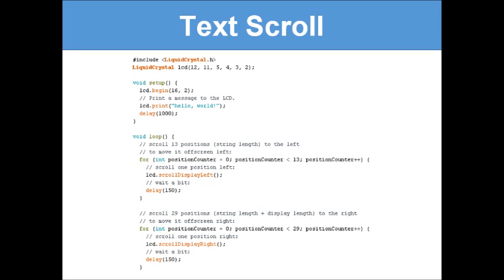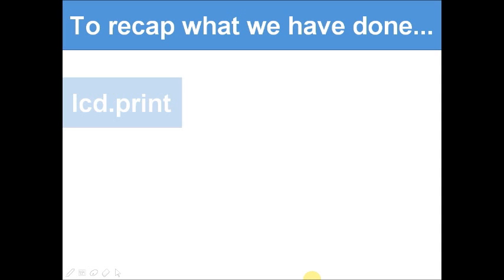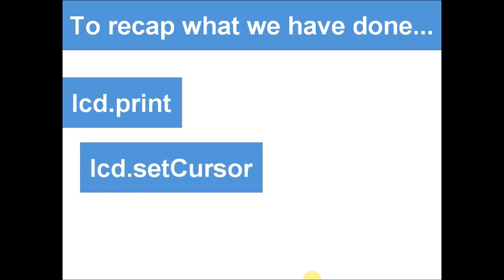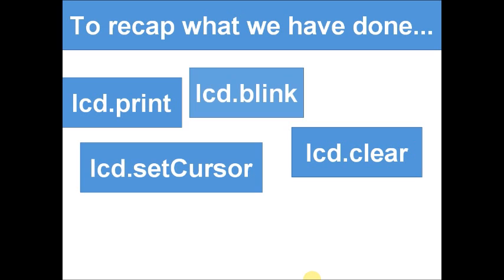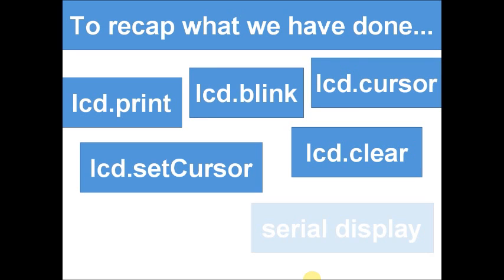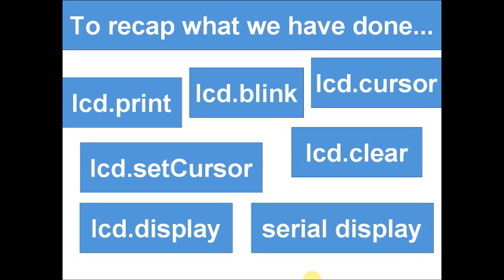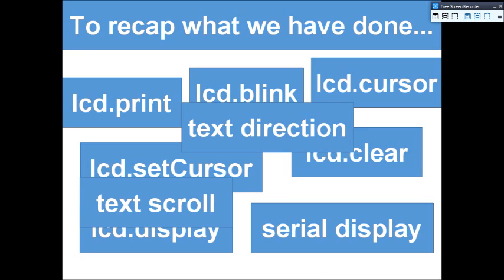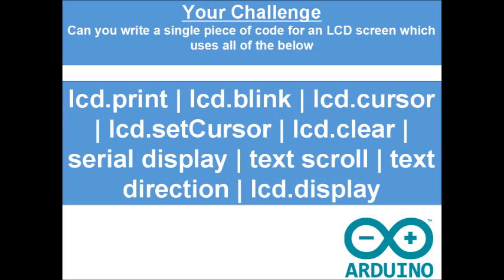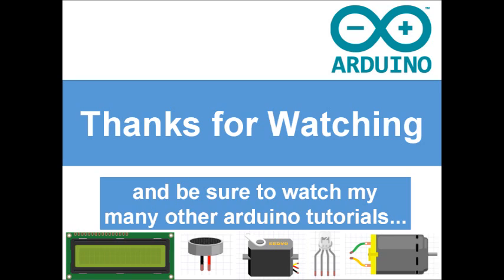Let's recap everything we've covered: lcd.print(), lcd.blink(), lcd.setCursor(), lcd.clear(), lcd.cursor(), serial display, lcd.display(), text direction, and text scroll. Now your challenge is to write a single piece of code for an LCD screen that uses all of these features. If you can't include all of them, try to include as many as possible. If you get stuck, go back through the video. That's all for today — thanks for watching, and next time we'll be doing a project with an LCD screen.